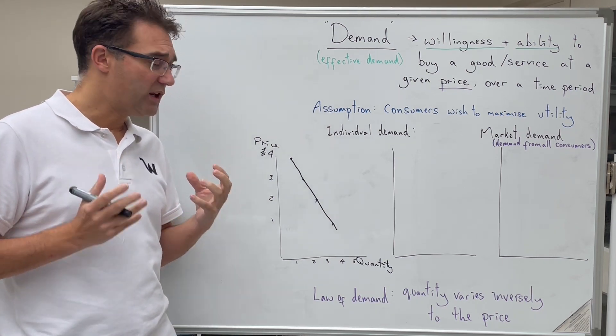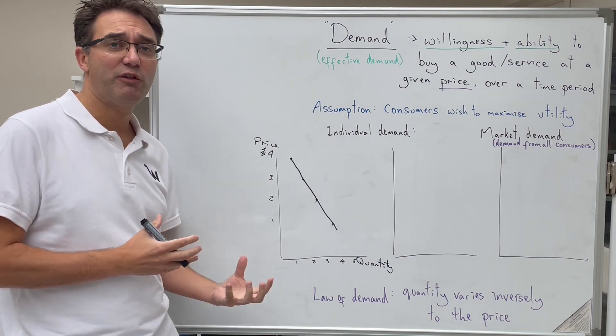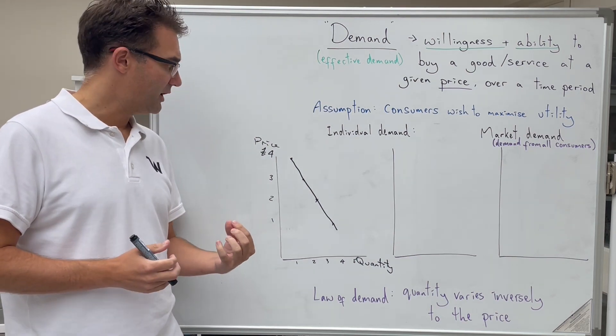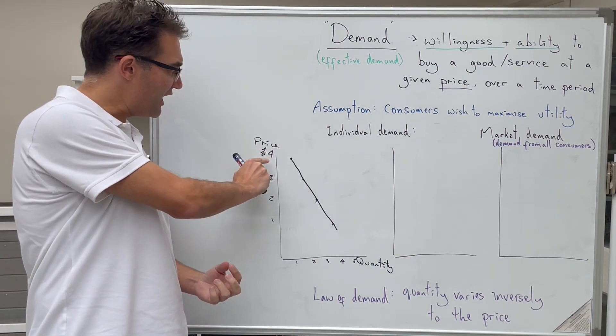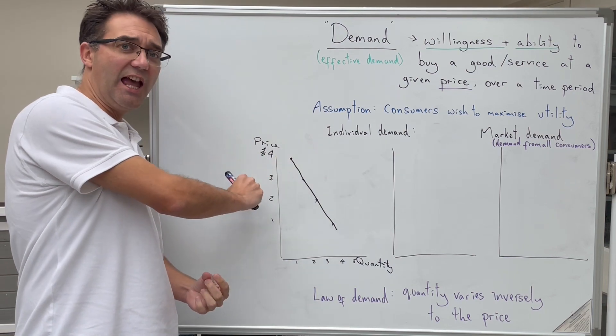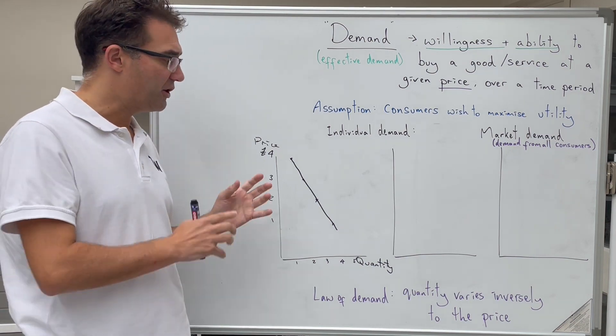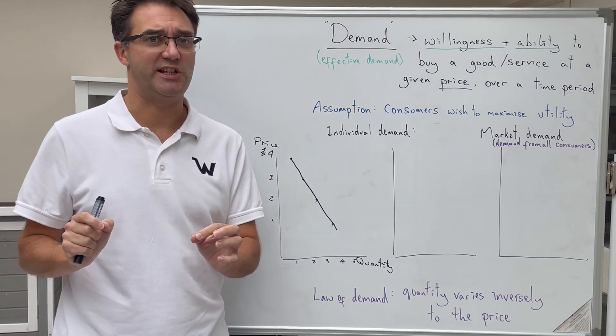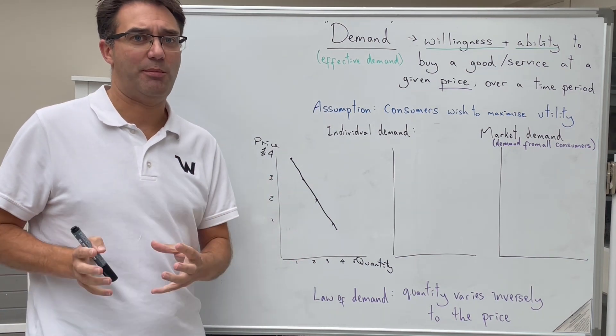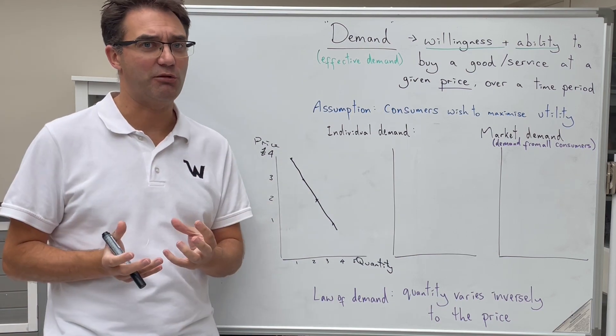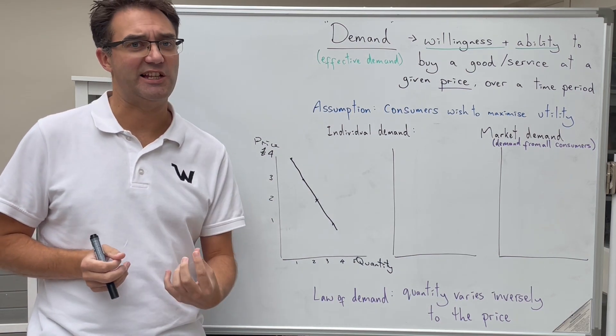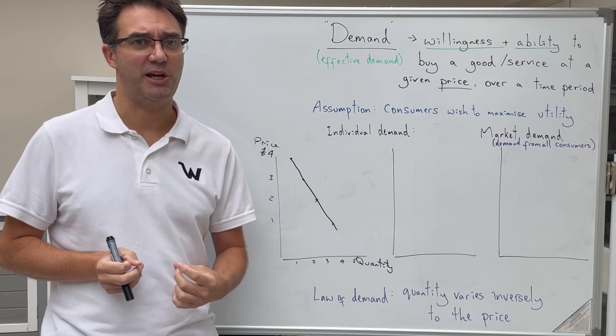All it is showing here is a graphical representation of at each price, if the price was this, what would be the quantity that I would buy at that. And at the moment, these are all still if points. We don't know what will actually happen in the market because there's other variables that help to determine that that we'll look at later when we get to the supply topic.